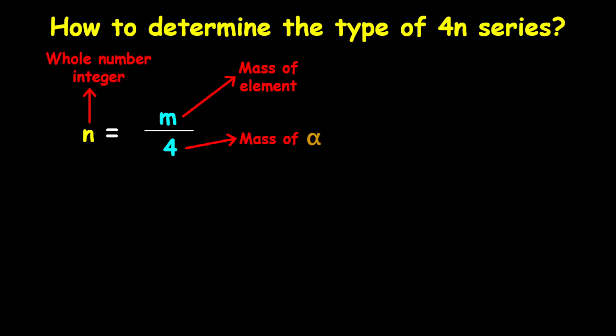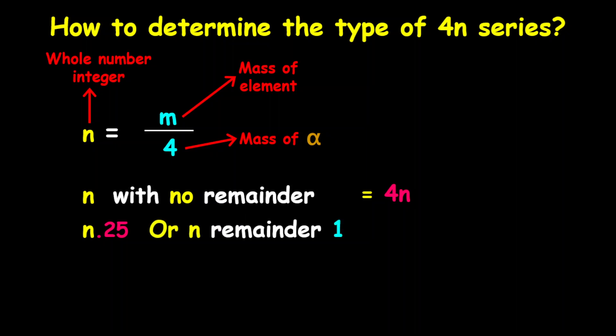If when dividing m by 4 you get n with no remainder, then it is just a 4n series. When you divide m by 4 and you get n point 25, which is the same thing as n and one remainder, then it is a 4n plus 1 series.